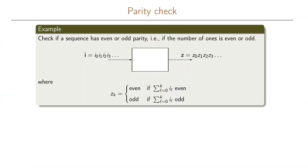Here is an example where we want to realize a state machine. The example that we're using here is a parity check example. So what we have in our system is that we want to check if a sequence put as input to the system has even or odd parity. This means we need to check if the number of ones received in the past is even or odd.